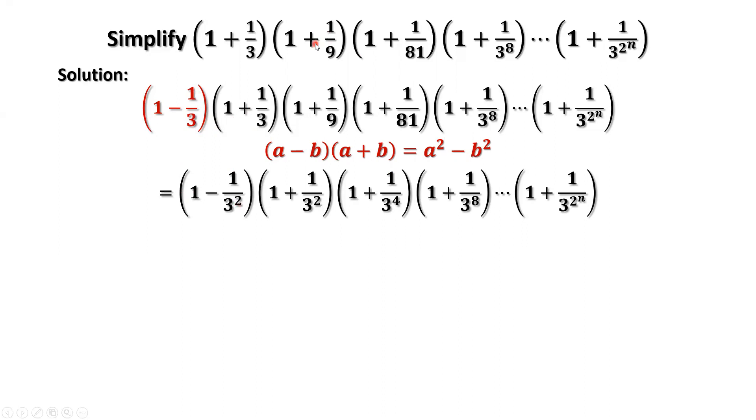This number, 1 plus 1 over 3, we can rewrite 9 in terms of 3 to the power of 2, which is 1 over 3 squared. Now we can consider the product of the first two items again to apply this formula, which is 1 minus 1 over 3 to the power of 4.